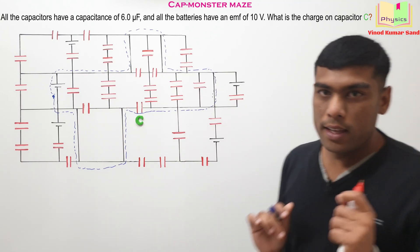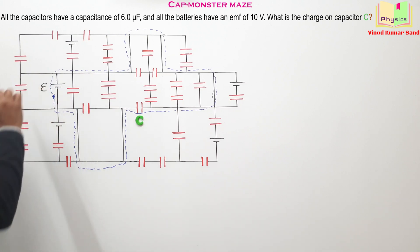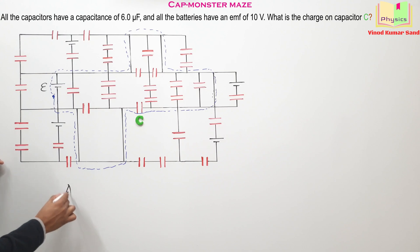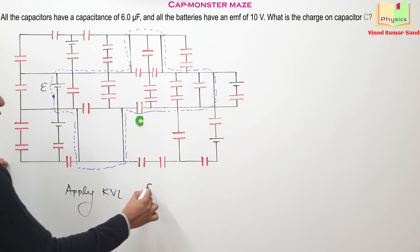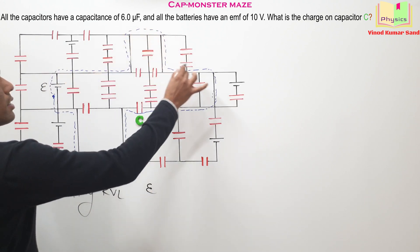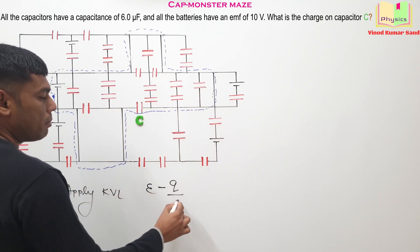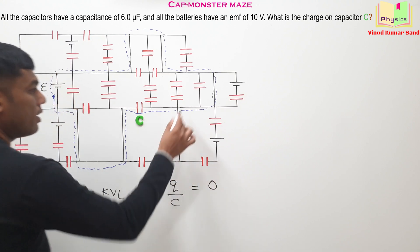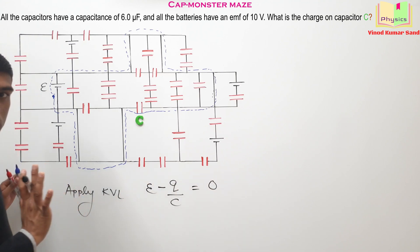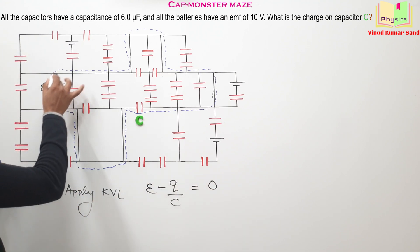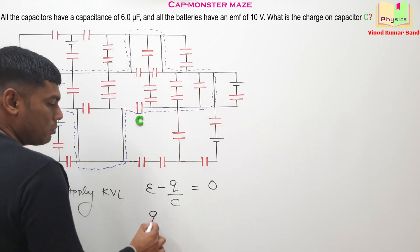In this blue loop we are going to apply the KVL. If this battery has the EMF equal to epsilon, let us write the KVL starting from here. I should write epsilon, and then, let us say the charge on this capacitor is Q, so epsilon minus Q by C. When you reach back to the same point, we write equal to zero. In this loop there is a single battery and one capacitor.